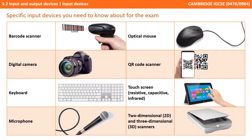These eight devices are: barcode scanners, digital cameras, keyboards, microphone, optical mouse, QR scanners, three different types of touch screens, and both two-dimensional and three-dimensional scanners.